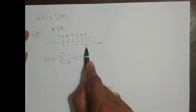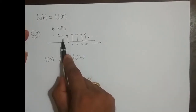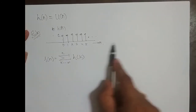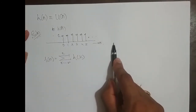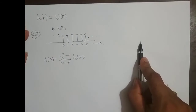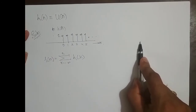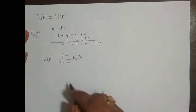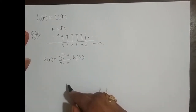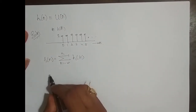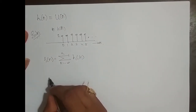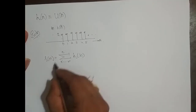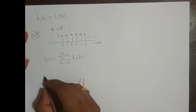If I keep n at 2, it is 3 — because 1 plus 1 plus 1. If I keep it at 5, it is 6, because 1, 2, 3, 4, 5, 6. If I keep it at 10, it is 11. If I keep it at 100, it is 101. That is why we call it a running sum.